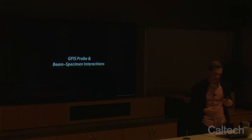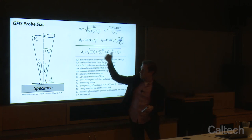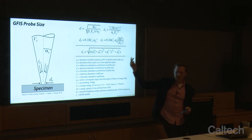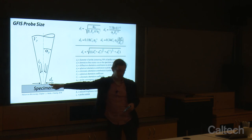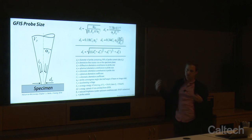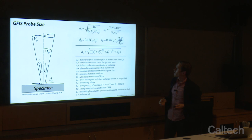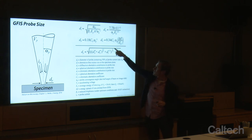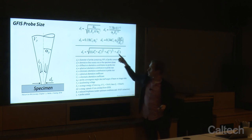Now it's important to go through the beam-specimen interactions. It all comes down to accelerating voltage, probe current, and probe convergence angle — those three parameters conspire to give you a probe size. You can look at the relevant equations for chromatic aberrations and spherical aberrations, and when you add up the contributions to probe size from all these, you get your final probe size.